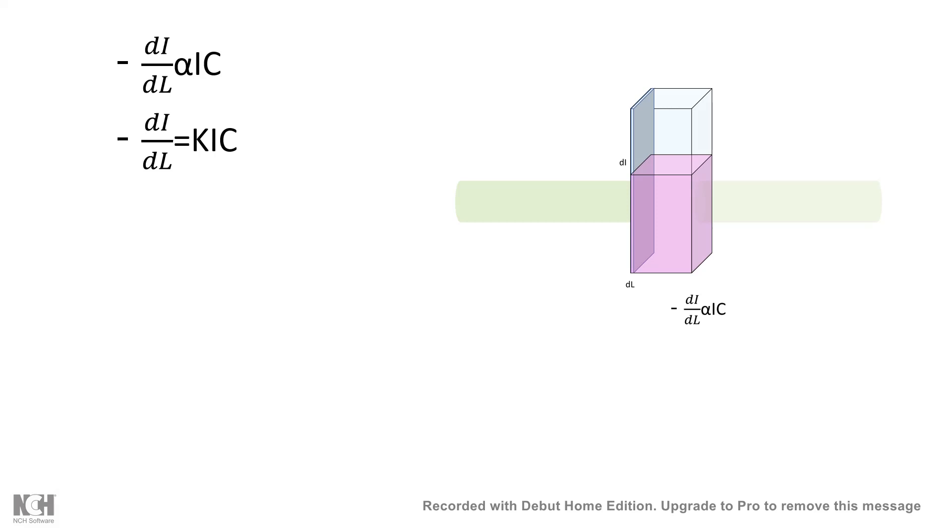If we start integrating it with proper limits, we would arrive at a formula which is log It by I0 equal to a constant times concentration into the path length.